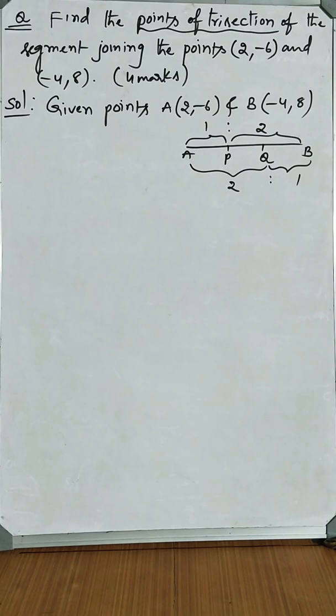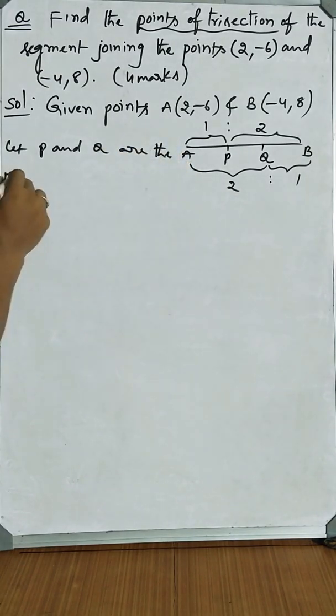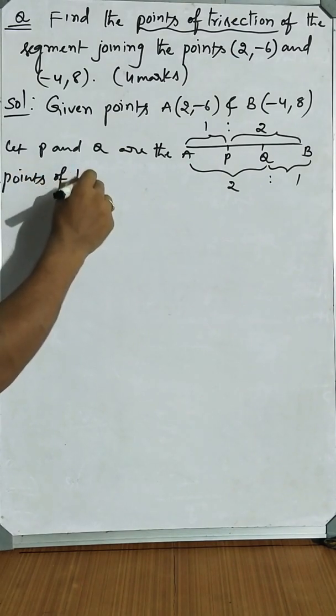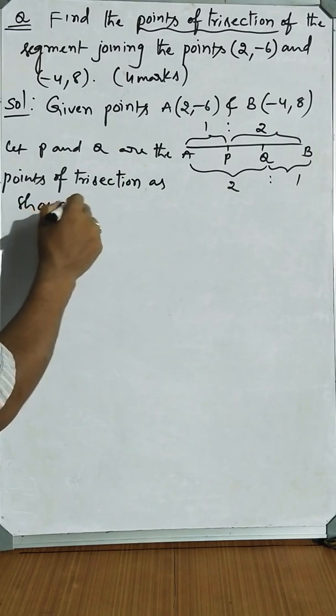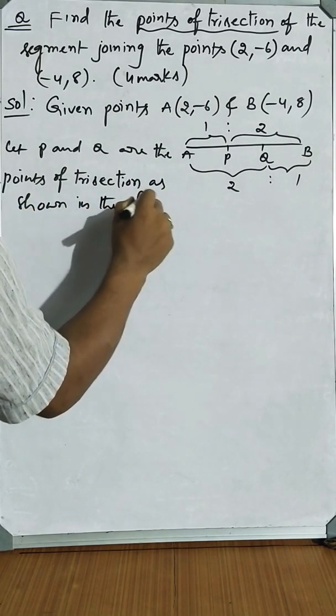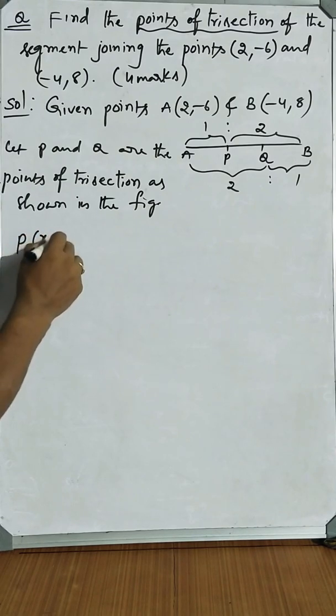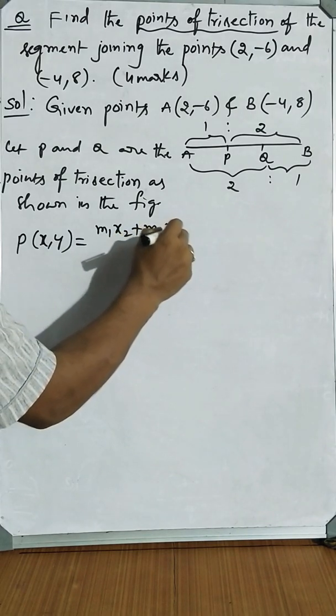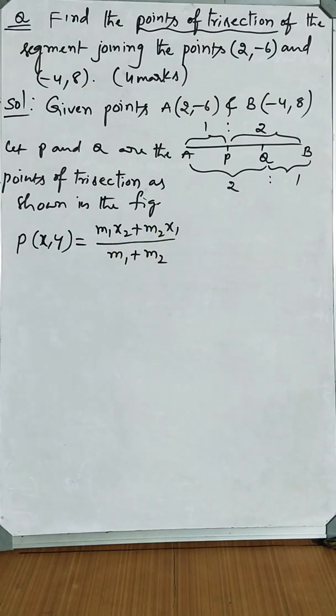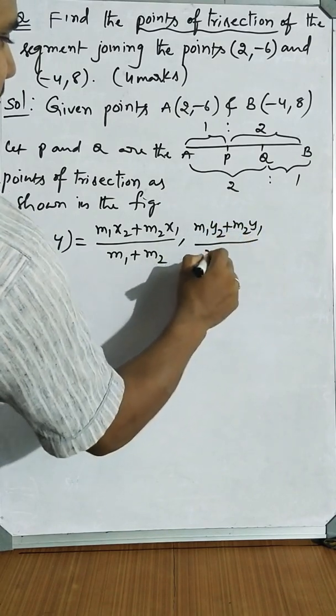Now you know the section formula. Let P and Q are the points of trisection as shown in the figure. The formula is: (m1x2 + m2x1)/(m1 + m2), (m1y2 + m2y1)/(m1 + m2).